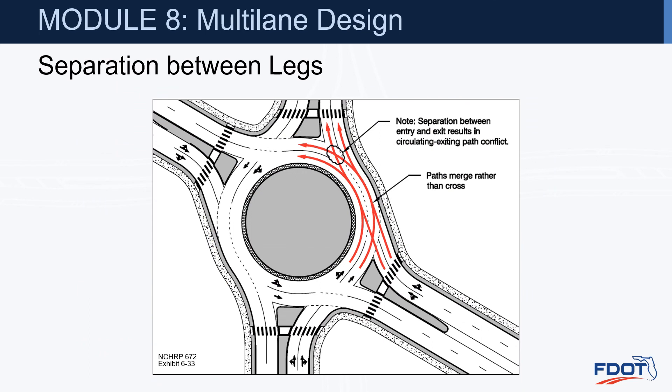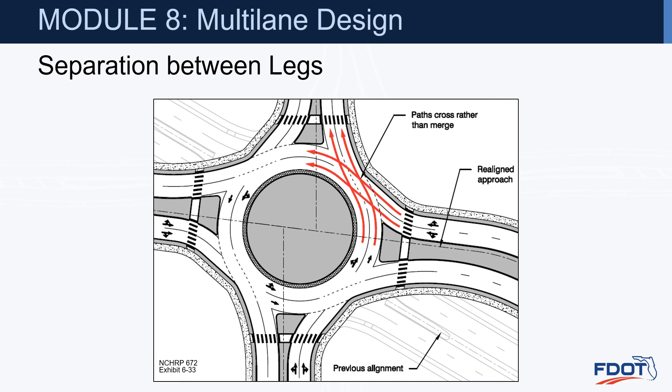Separation between legs. Problems can occur when the design allows too much separation between entries and subsequent exits. Large separations between legs cause entering vehicles to join next to circulating traffic that may be intending to exit at the next leg, rather than crossing the path of exiting vehicles, creating conflicts at the exit points. A solution involves realignment of the approach legs so that the paths of entering vehicles cross the paths of circulating traffic rather than merging, to eliminate the conflict.